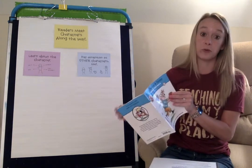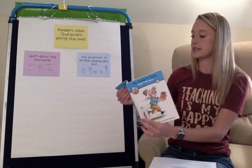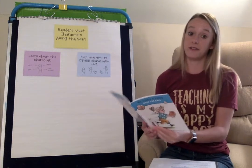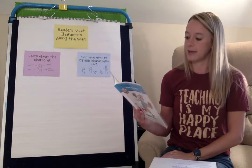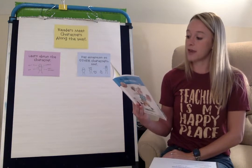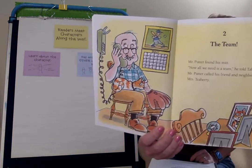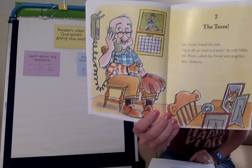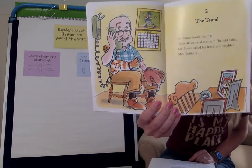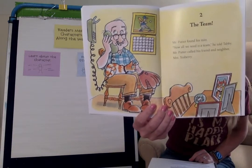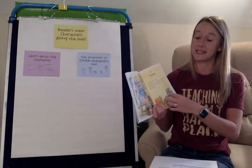We're going to start on chapter two where we left off. Chapter two: The Team. Mr. Putter found his mitt. 'Now all I need is a team,' he told Tabby. Mr. Putter called his friend and neighbor, Mrs. T-berry. Oh — there's another character in this story, Mrs. T-berry. She's Mr. Putter's friend and neighbor. Let's be sure to pay attention so that we can learn about Mrs. T-berry too.